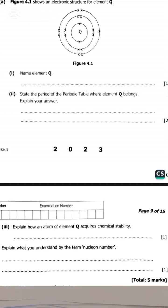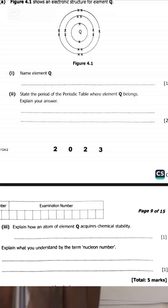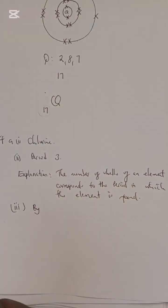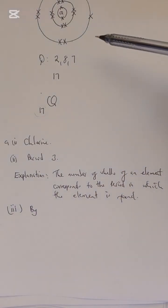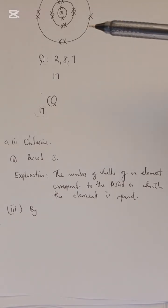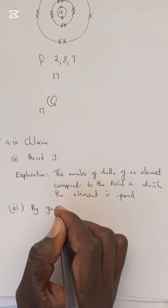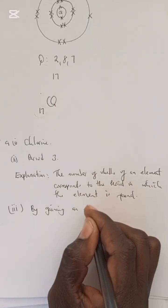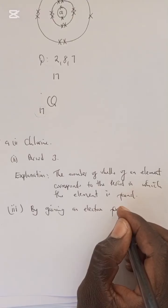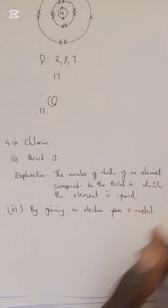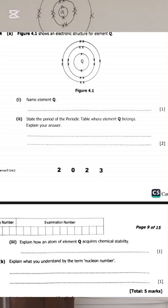Then we go to question 4A3. The question reads: explain how an atom of element Q acquires chemical stability. Now look at it - because this one is not stable, it needs to react for it to acquire stability. And it can only do so by gaining an electron from a metal. That is when it acquires chemical stability. So we say: by gaining an electron, possibly from a metal, that is when it acquires chemical stability.